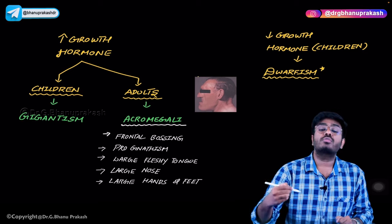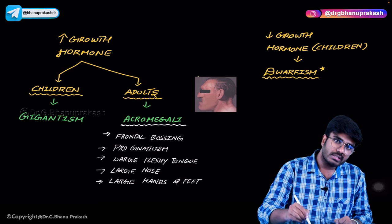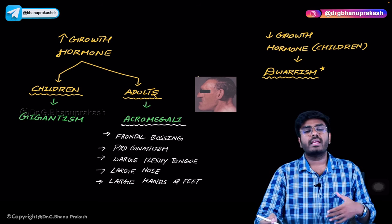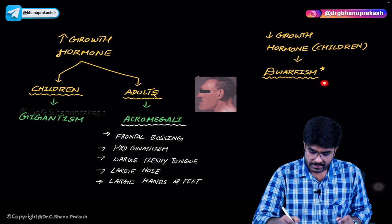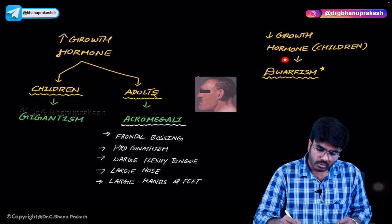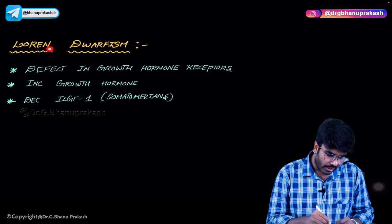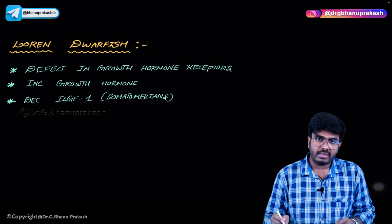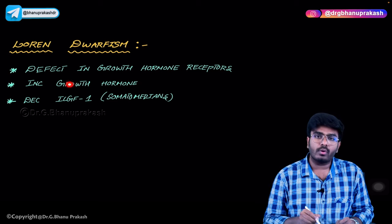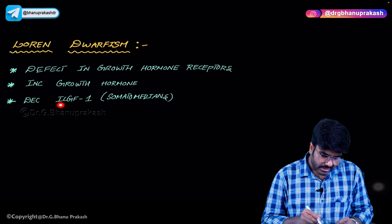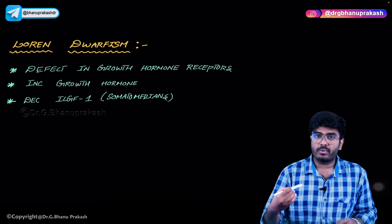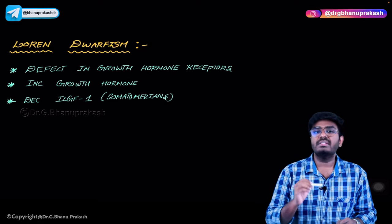In summary: increased growth hormone in adults causes acromegaly; in children it causes gigantism. Deficiency of growth hormone in children causes dwarfism, where the person cannot grow in height. Importantly, dwarfism is not only due to decreased growth hormone — Laron dwarfism occurs when growth hormone is present or even elevated, but the growth hormone receptor is defective, so somatomedin C and IGF are absent, preventing bone growth.